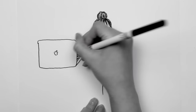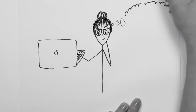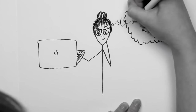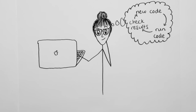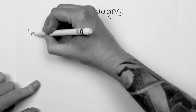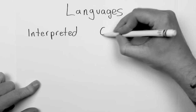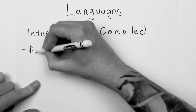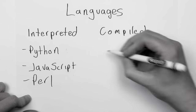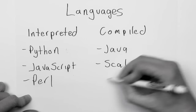Both approaches have pros and cons, so most professional programmers know at least one interpreted language and one compiled language. Examples of interpreted languages are Python, JavaScript, and Perl. Examples of compiled languages are Java, Scala, and C++.